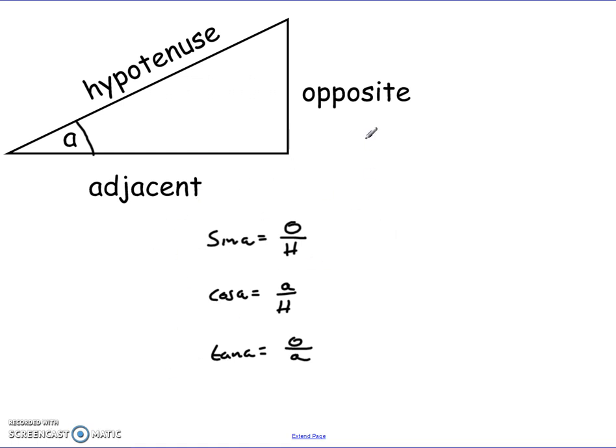We can get the three trig ratios from this. We can use our SOH-CAH-TOA to get all three trig ratios. So sine A is opposite over hypotenuse, cos A is adjacent over hypotenuse, and tan A is opposite over adjacent.